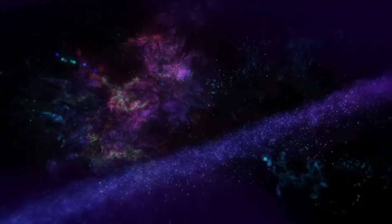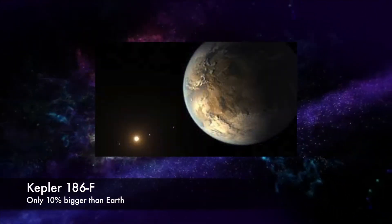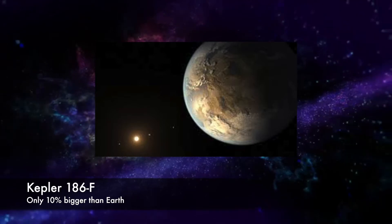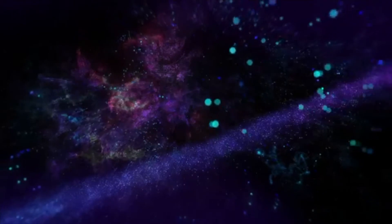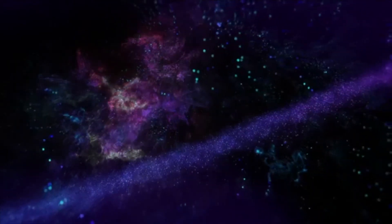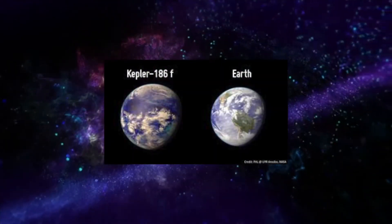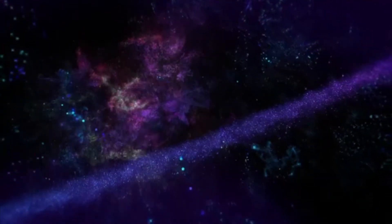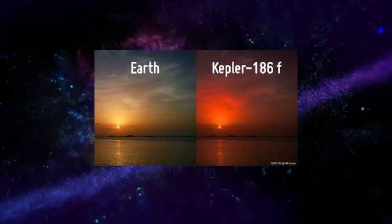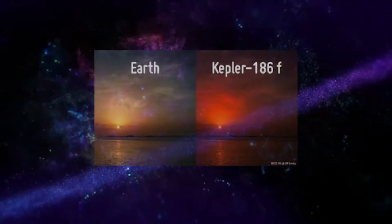The discovery of Kepler-186f confirms that planets the size of Earth exist in the habitable zone of stars other than our sun. Kepler-186f is a planet that is 10% bigger than Earth and orbits a star which is smaller than our sun. In fact, it is just as dim as our sun is just one hour before it sets.